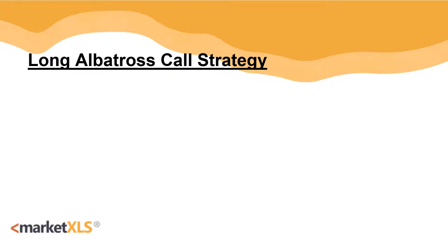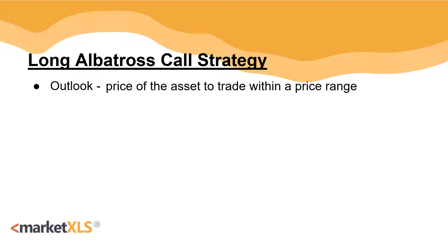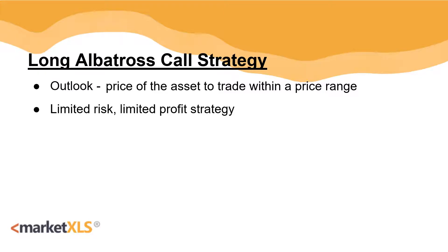A Long Albatross Call Option Strategy is best implemented when you're expecting the price of the underlying asset to be range-bound. This spread is actually a long condor spread with extremely long wings, created by writing the short legs at a much wider strike difference.